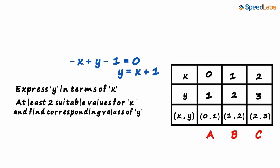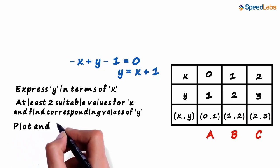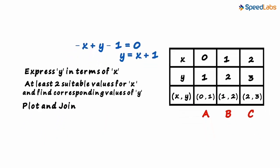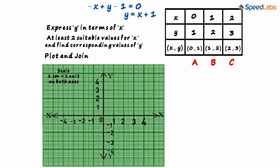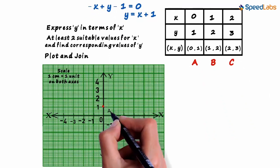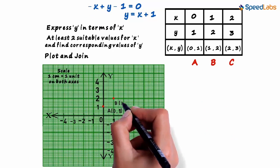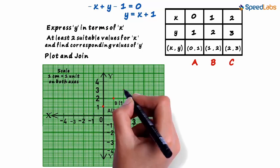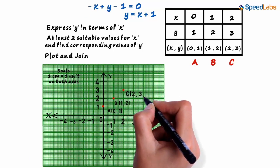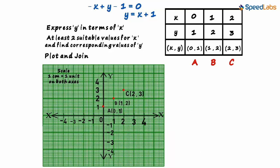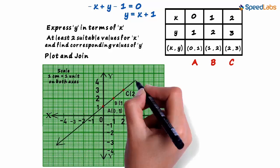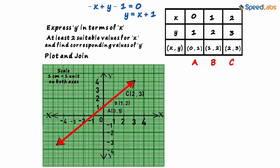The difficult task is over. In the third step, we just need to plot these points and join them. Here's your graph. This is point A, zero comma one. This is point B, one comma two. And this is point C, two comma three. Now we draw a line passing through these three points. This becomes the line for our equation minus x plus y minus one equals zero.